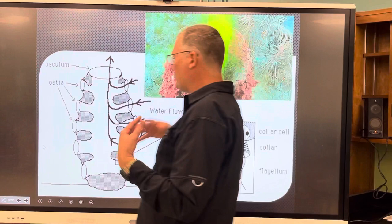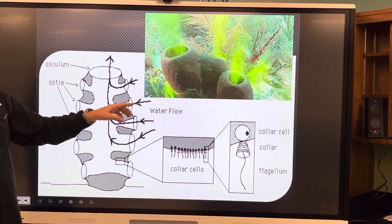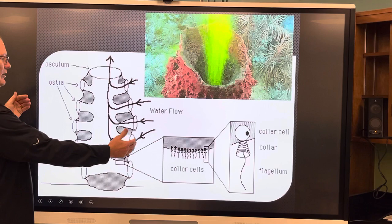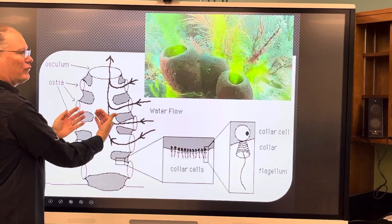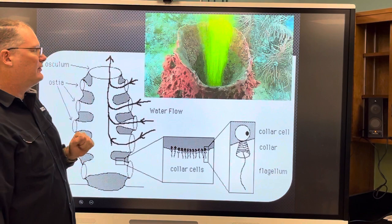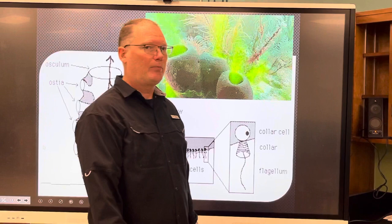Here's a different picture: they put green dye along the outside to see the action of the collar cells pulling water in through the pores and coming back out through the osculum. You can see the flow of water if you just put a little bit of non-toxic food coloring into the water near the sponge.